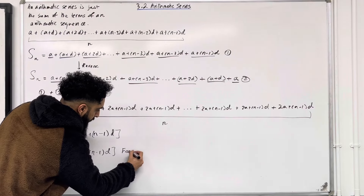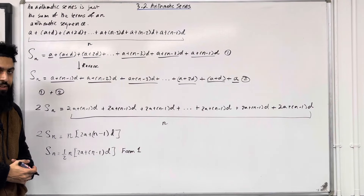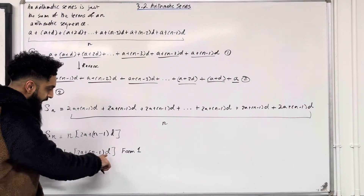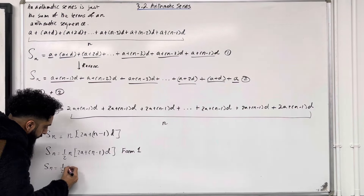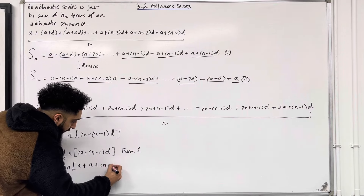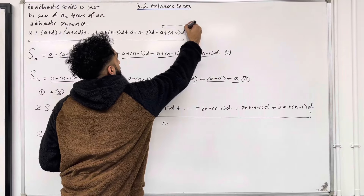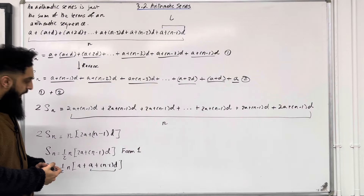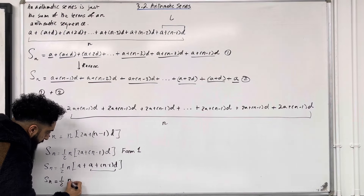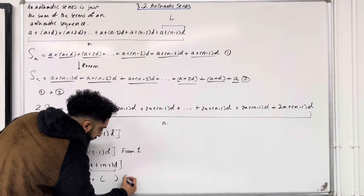Dividing by 2, we get S_n equals one half times N times square bracket 2A plus N minus 1 times D. This is Form 1 of the S_n formula — the sum of the first N terms of an arithmetic series. I can also split the bracket: 2A becomes A plus A, and A plus N minus 1D is the last term L. So Form 2 is S_n equals one half N times A plus L.